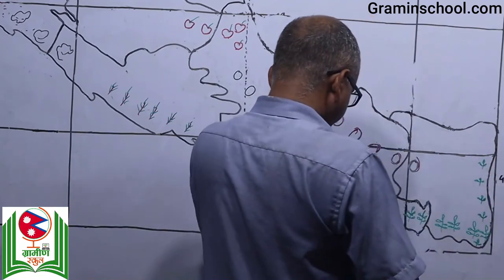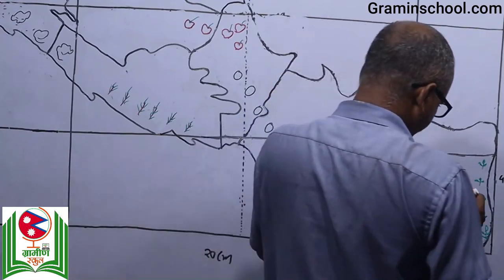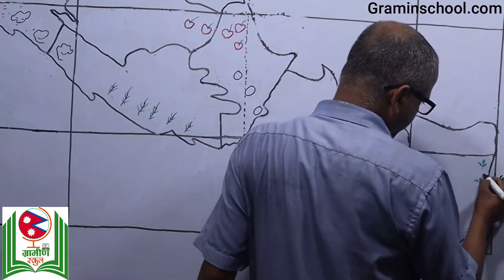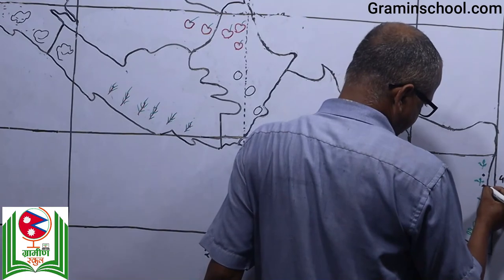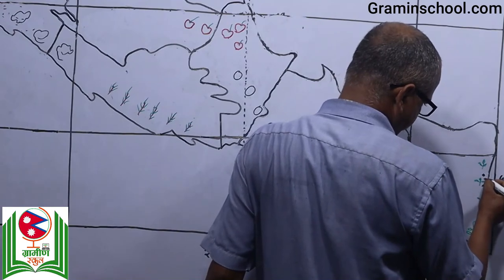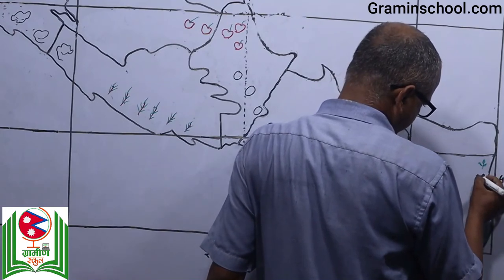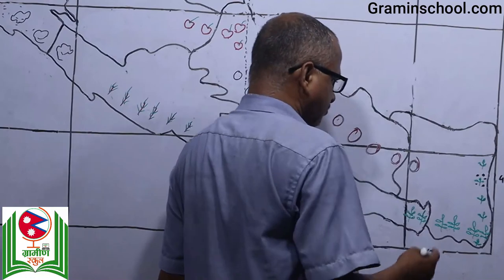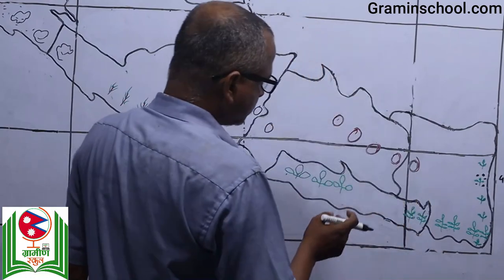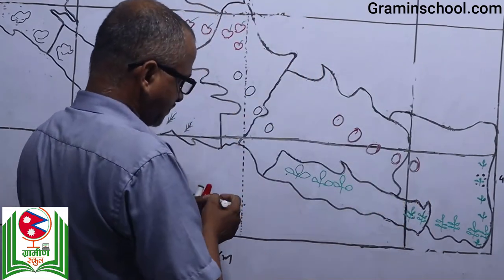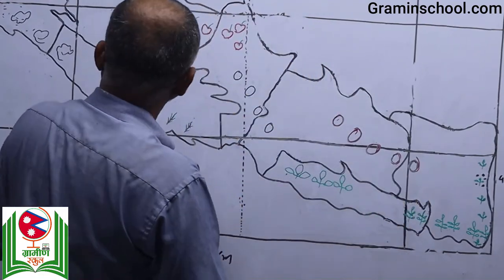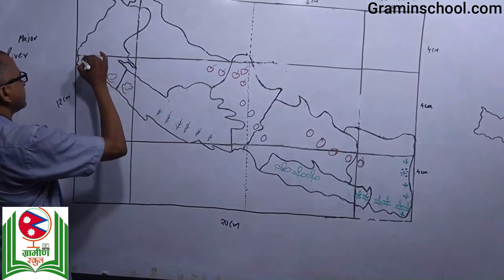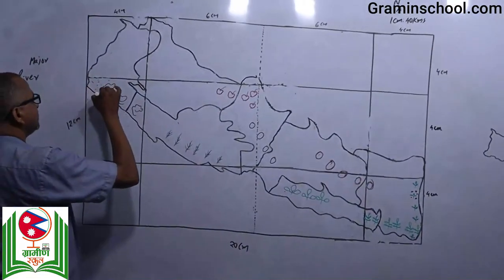Cardamom production area — the world's biggest cardamom production area is Ilam district of Nepal. It grows the largest quantity of cardamom in the world. Without further delay, let me write the names.